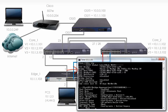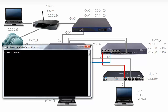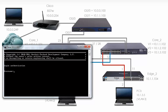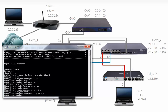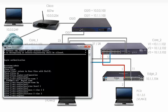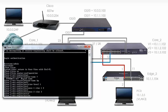Let's configure Core 2 — telnet 10.1.1.102. STP region configuration: it's important that everything be configured exactly the same, so it makes sense to do this configuration in Notepad and copy it onto the devices. Revision number is 1. Instance 1 has VLANs 1 and 2 mapped to it. Instance 2 has VLAN 3 mapped to it. I'm going to make the configuration active.